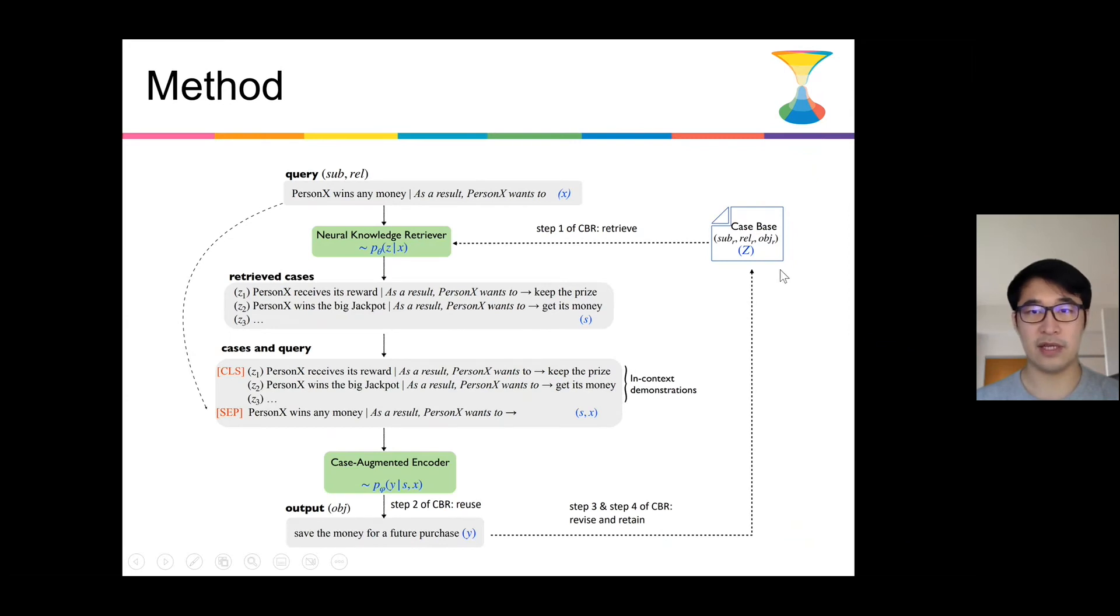Our method can be summarized in this figure. When given a query which consists of a subject and relation, a neural knowledge retrieval will retrieve from the cases related cases, and the related cases will be augmented, will be concatenated with the current query as the final input to the case augmented encoder.